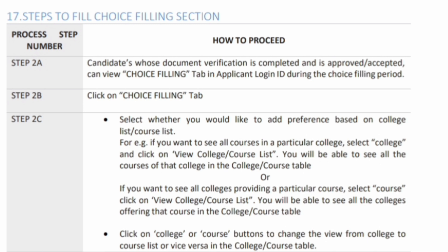The steps to fill the choice filling start at Step 2A. The question may be: why is it not starting from Step 1A? That is because Step 1 is all related to counselling registration itself, which you have already completed. COMEDK has given Step 2A onwards, which is basically choice filling for the initial round.